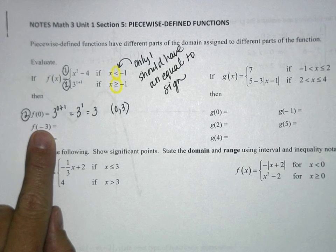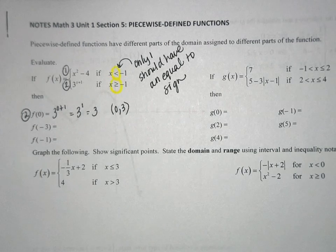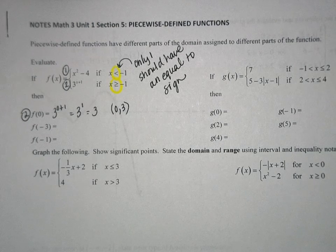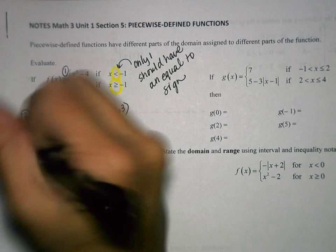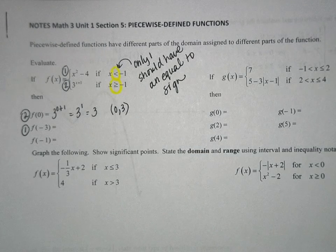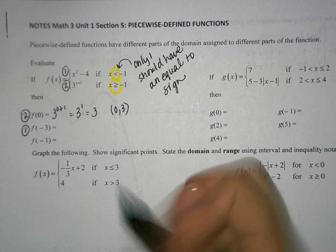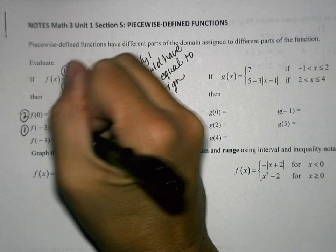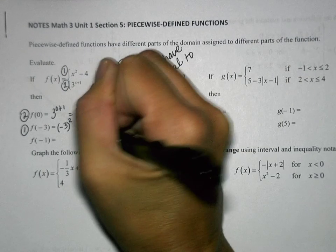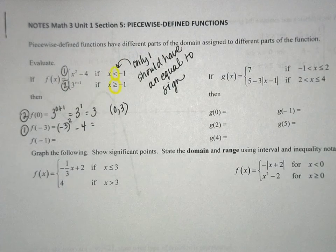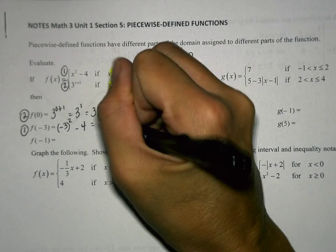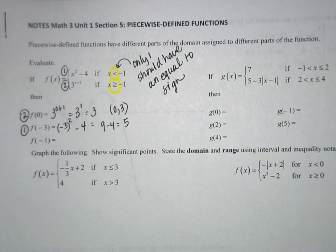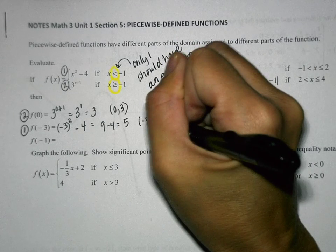We write that as an ordered pair, because that would be a point at (0, 3). For f of negative 3, we use the first equation. We take negative 3 and plug it into the first equation — we're squaring negative 3. Negative 3 squared is 9, and 9 minus 4 equals 5. So that ordered pair would be (negative 3, 5).